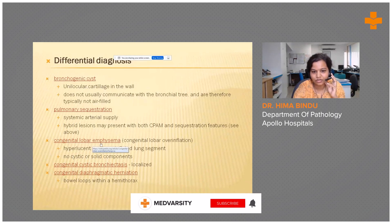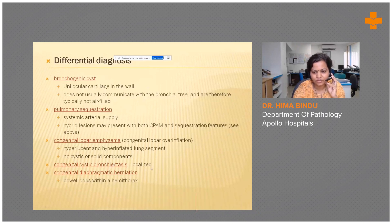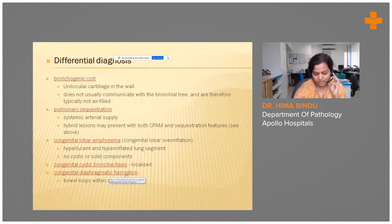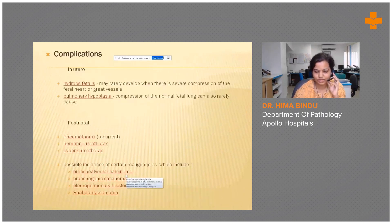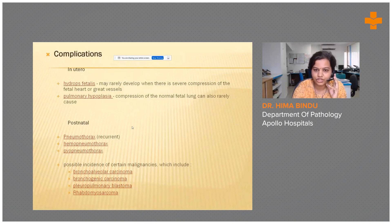Other differentials include congenital lobar emphysema, which is a hyperinflated segment of lung; bronchiectasis, which is usually localized; and congenital diaphragmatic hernia, where bowel loops are present within the thorax.